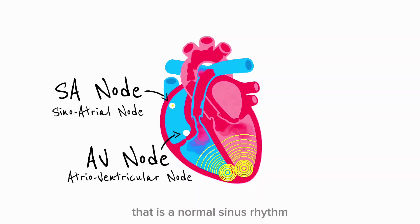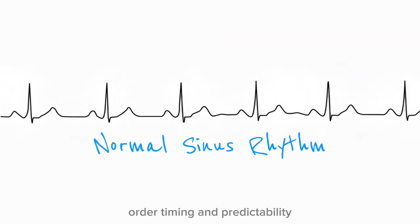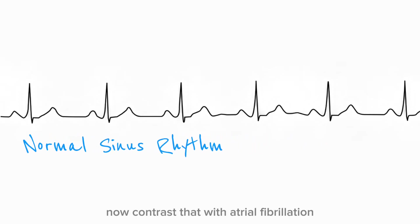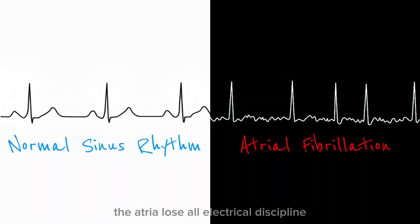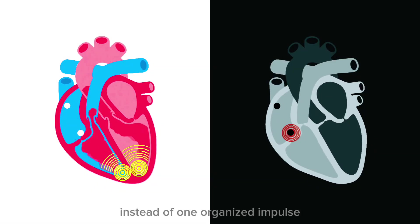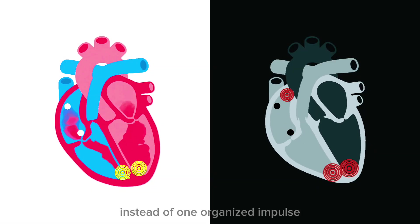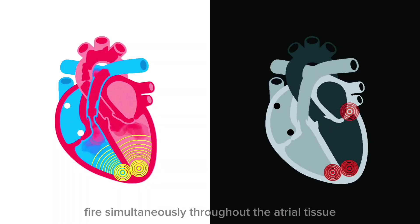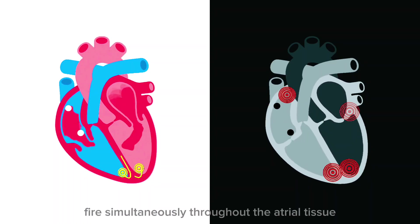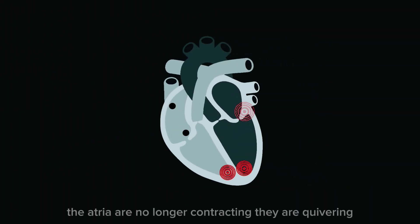That is normal sinus rhythm: order, timing, and predictability. Now contrast that with atrial fibrillation. In atrial fibrillation, the atria lose all electrical discipline. Instead of one organized impulse, hundreds of chaotic electrical signals fire simultaneously throughout the atrial tissue. The atria are no longer contracting — they are quivering.